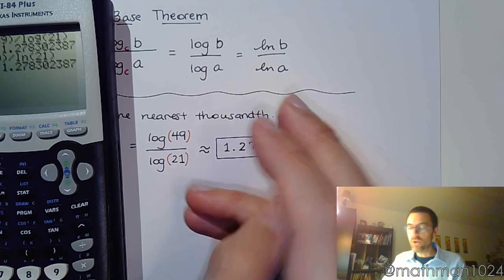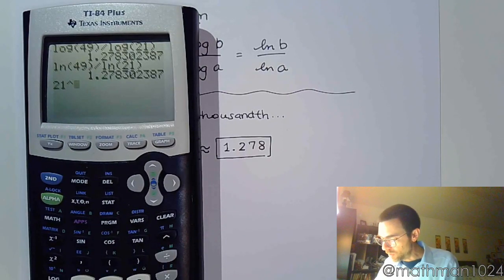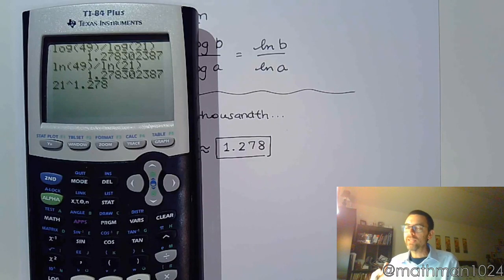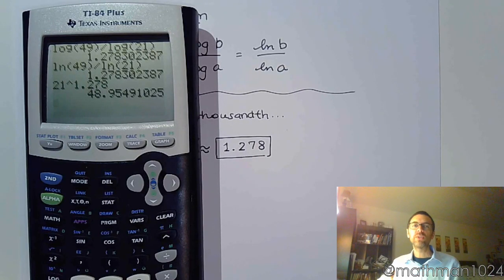And what we're saying here is that if I were to take 21 and raise it to the 1.278 power, it's not going to be exactly equal to 49, but it's going to be close. And the reason it's not going to be exact is because we rounded.